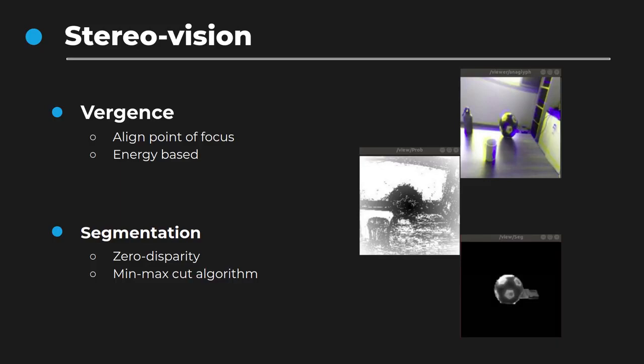This process allows extracting only the relevant information from the initial point of focus — here, the ball — discarding other information. Using the attention module to focus on only a part of the image facilitates the segmentation process. This entire pipeline is inspired by the human vision system, where binocular movements help to focus and segment the object from the background.